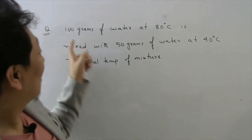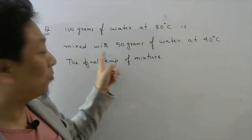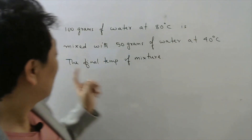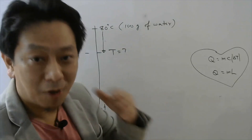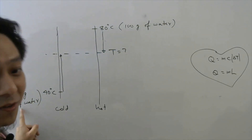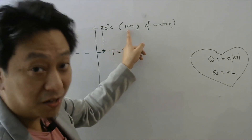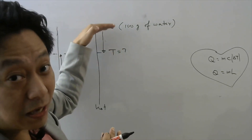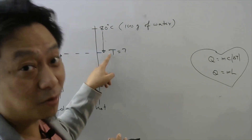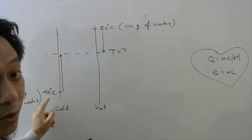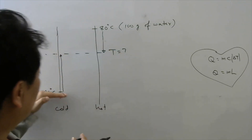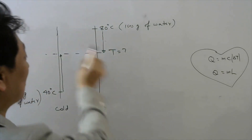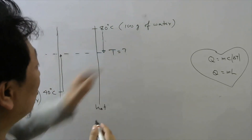First question: 100 grams of water at 80°C is mixed with 50 grams of water at 40°C. Find the final temperature of the mixture. The hot water will lose heat and its temperature will drop from 80°C, while the cold water will gain heat and its temperature will rise from 40°C. The final temperature must be somewhere between 40°C and 80°C.